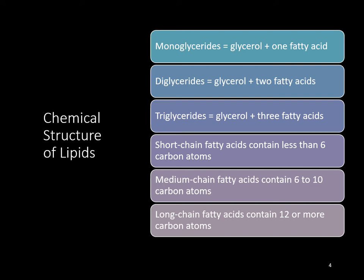Lipid digestion starts in the mouth, where teeth break up the food and form a bolus, which is swallowed and goes to the stomach to churn and mix. The liver produces bile, the gallbladder stores and secretes bile, and the pancreas produces pancreatic lipase, which is important for breaking down lipids. In the small intestine, refer to page 103, and in the large intestine, partially digested and undigested lipids become part of fecal material and are excreted.